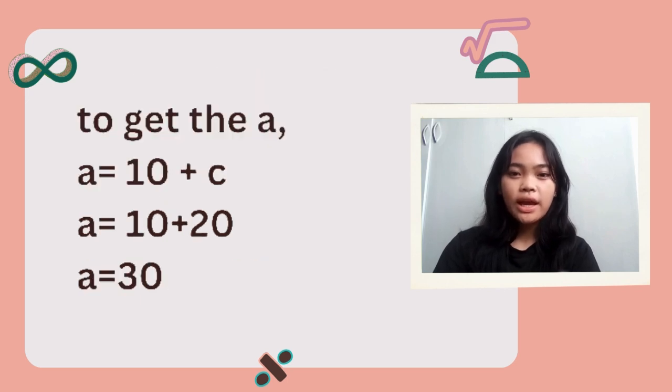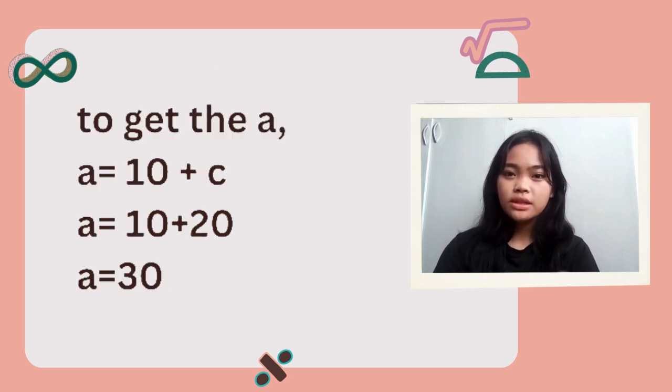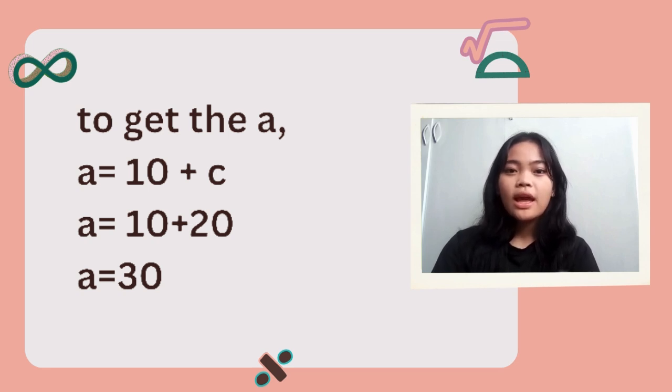To get A, we add 10 and C. We know that C is equal to 20, so when we add 10 and 20, we get A is equal to 30.